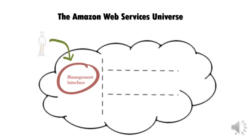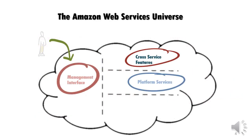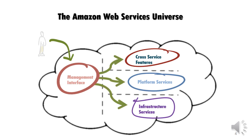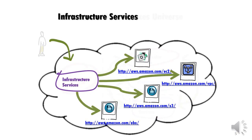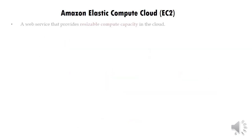The Amazon Web Services Universe includes Management Services, Cross Services, Platform Services, and Infrastructure Services. Amazon EC2 is there, along with S3 and Enterprise and Business Services.